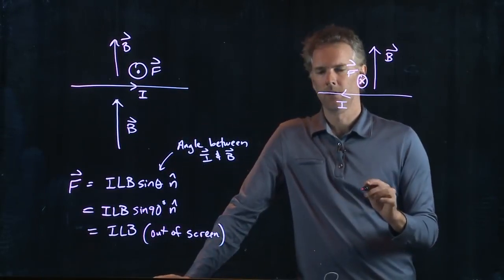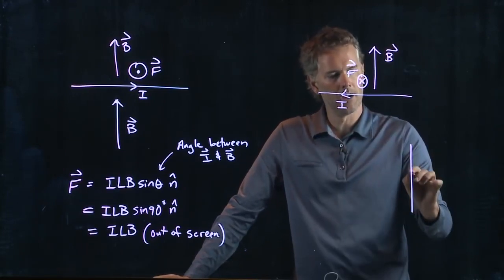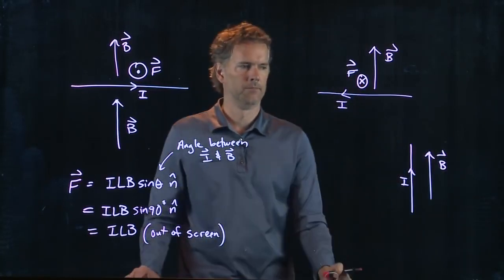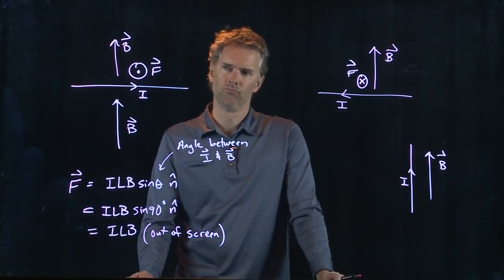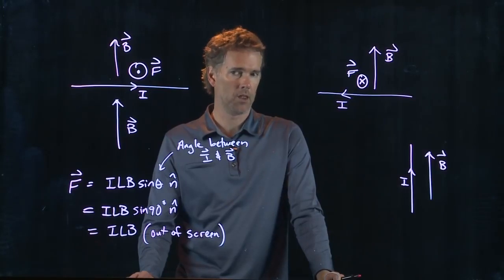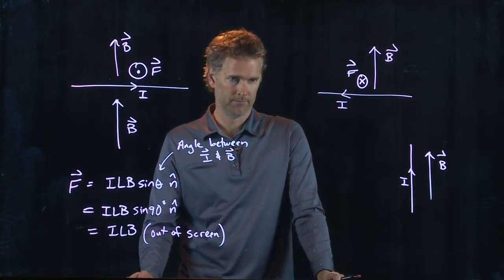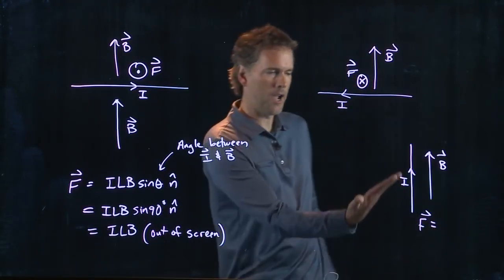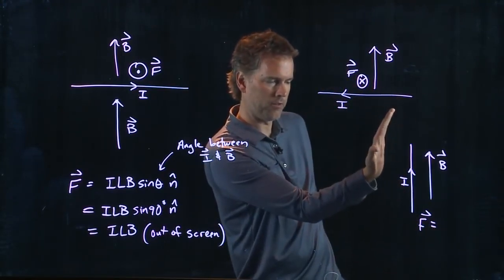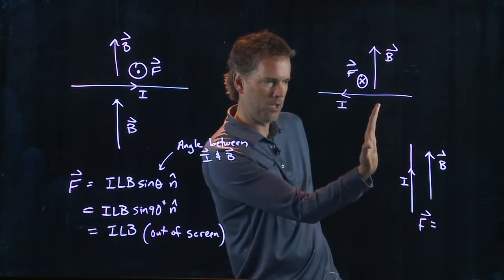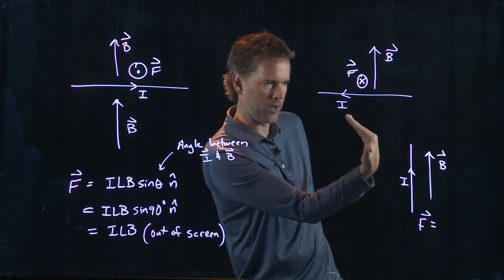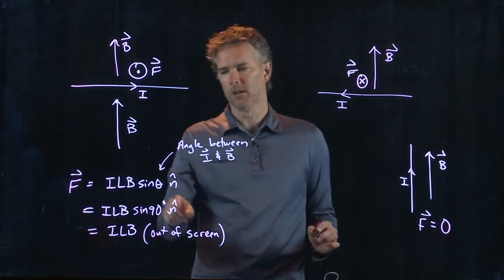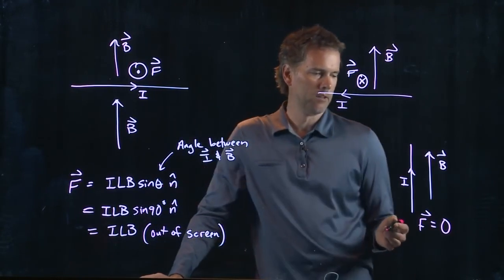What about this? Let's say I draw current going up, B field going up. What's the direction of the force on that? Or what is the force on that? Remember, finger straight in the direction of I. Now you curl your fingers into the direction of B. But wait a minute, I can't curl them in any direction, right? That doesn't work, and that doesn't work because B is in the same direction. So the force is zero. And that's because theta is, of course, zero. You get sine of zero, which is zero.